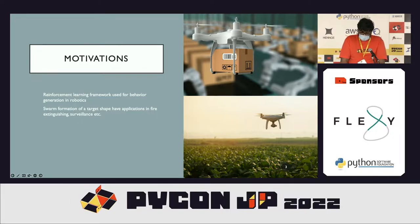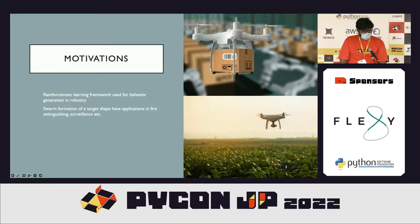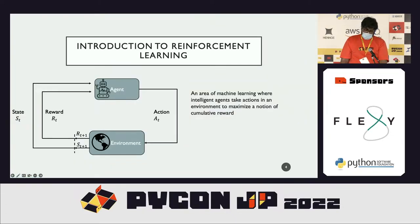Reinforcement learning is often used for behavior generation in robotics. This framework allows an agent to learn to solve particular tasks. Swarms, on the other hand, contain multiple agents which all try to solve some objective together. Swarms in robotics have been extensively used in surveillance and fire-extinguishing applications, where the agents maintain a particular formation. Now I'll briefly introduce the concept of reinforcement learning.